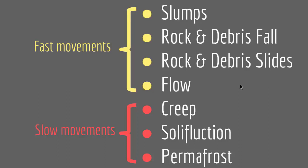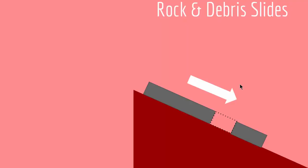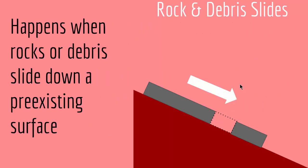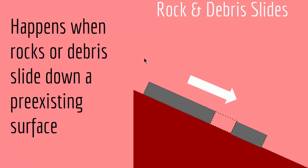Let's explore each in more detail. We'll start with the fast movements, beginning with rock and debris slides. Rock and debris slides happen when rock or debris slide down a pre-existing surface. When the friction between the surface and the rock is less than the gravity acting on it, or the steepness of the slope exceeds the friction, the rock will slide downslope. This is a form of fast movement.